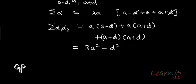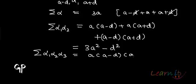Apart from that, the product of all three roots will equal A(A-D) · A · (A+D), which essentially gives A(A²-D²). So that's the relationship between the roots and the coefficients in that case.